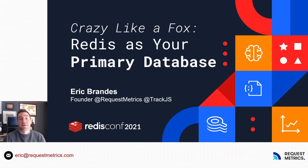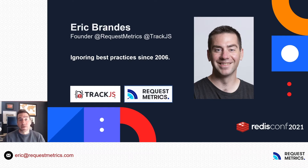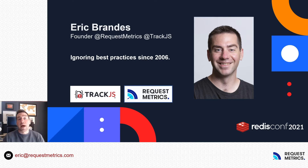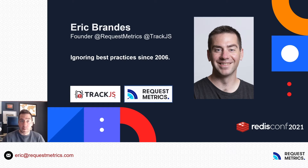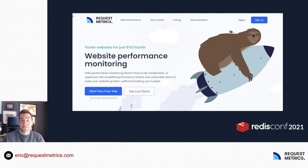Hi, and welcome to Crazy Like a Fox: using Redis as your primary and only database. My name is Eric Brandes and I run two different software companies. The first is TrackJS, which is a JavaScript error monitoring service, and the second we're going to talk more about today is called Request Metrics. It's a real user performance monitoring tool that uses only Redis as its database. Prior to that, I spent 12 years as an enterprise software consultant toiling in the bowels of the Fortune 500, where I learned a lot about how to write software, but maybe even more about how not to write software. The purpose of this talk is to dig in a little bit as a case study about how we built Request Metrics using Redis as the only database.